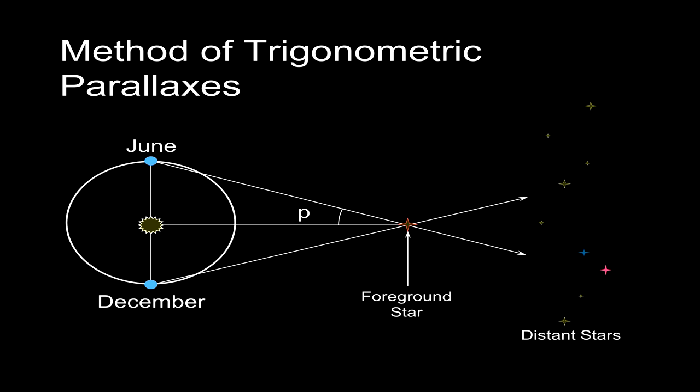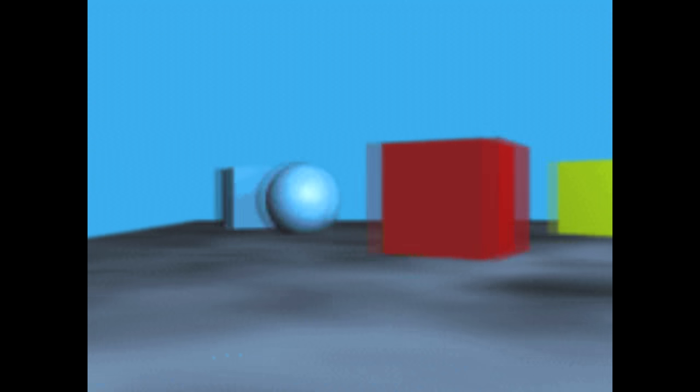To figure out how far a star is we use the parallax method. Parallax is the visual effect produced when as an observer moves, nearby objects appear to shift position relative to more distant objects.